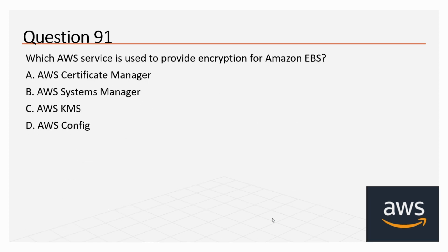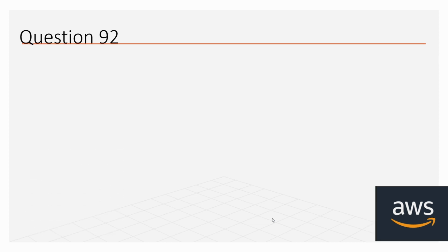Question number 91: Which AWS service is used to provide encryption for Amazon EBS? Options: A. AWS Certificate Manager, B. AWS Systems Manager, C. AWS KMS (Key Management Service), D. AWS Config. The correct option is C, AWS KMS.